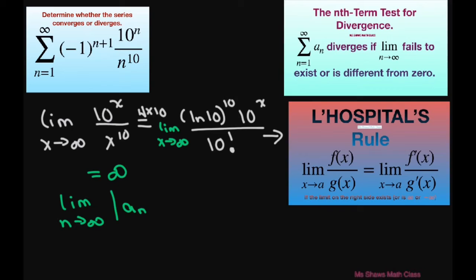does not equal 0. So our series Σ(n=1 to ∞) (-1)^(n+1) * 10^n / n^10 diverges.